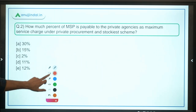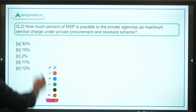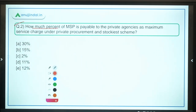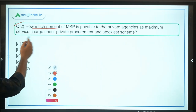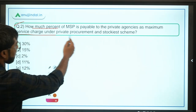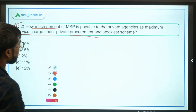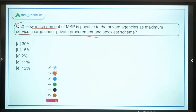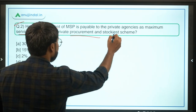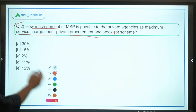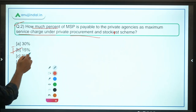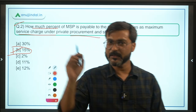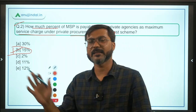Practice question 2: What percent of MSP is payable to private agencies as maximum service charge under the Private Procurement and Stockist Scheme? The answer is 15 percent.